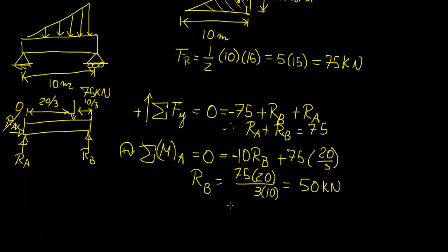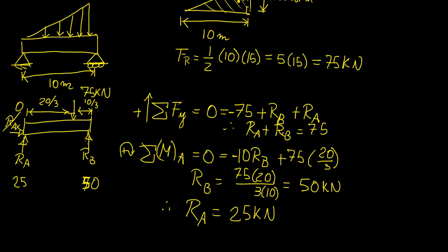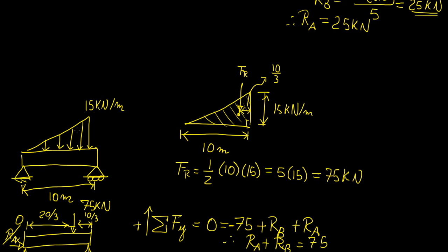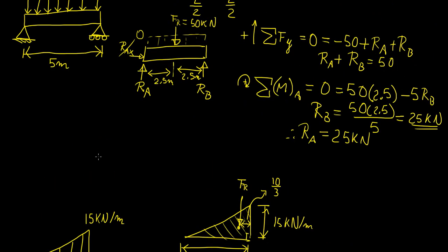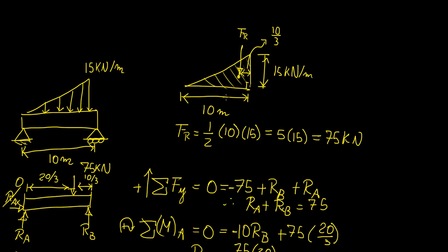That implies Ra is going to be 25 kilonewtons. This is not unexpected either — there is much more distributed load on the right-hand side, so the reaction at B needs to be larger to compensate, while Ra is less because there's less load on that side. We can usually tell just by looking at the physical properties of the system whether our answer is correct. In the next video, I'll show you how to deal with distributed loads that are not simple linear or uniform relationships, using very similar concepts to what we've covered here.